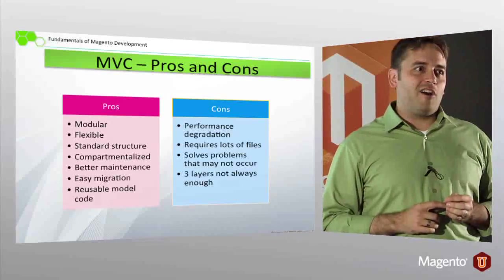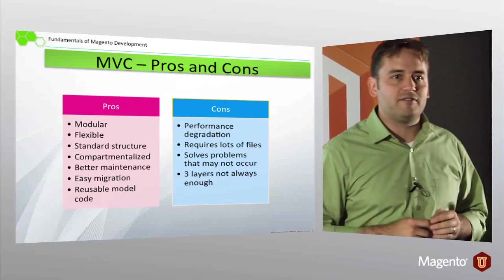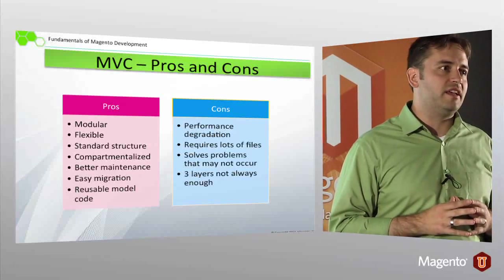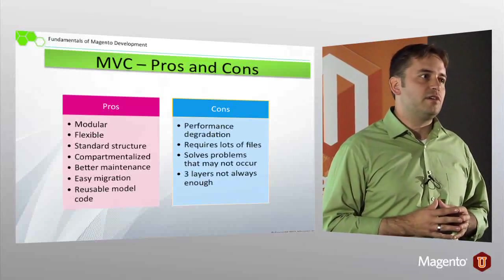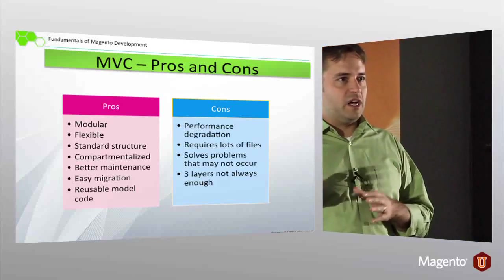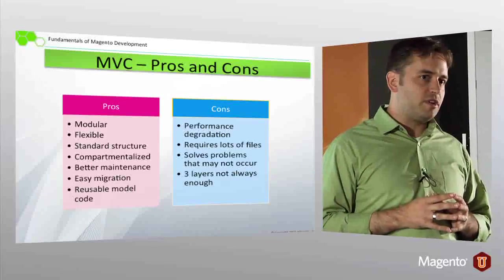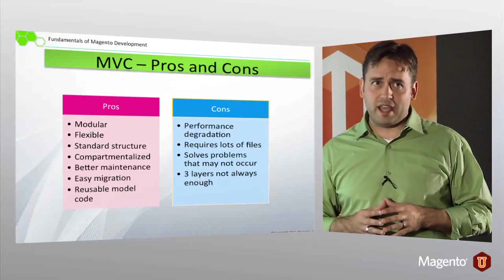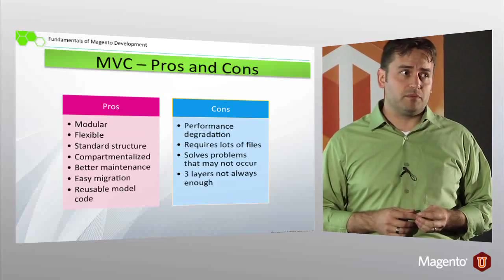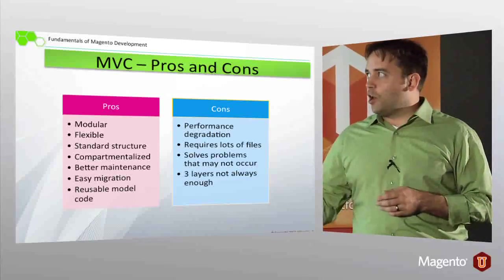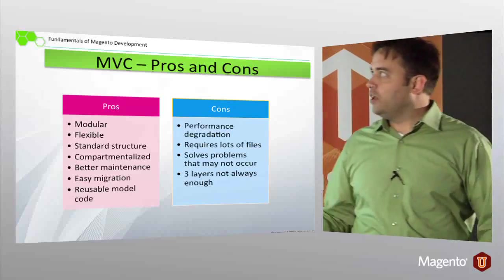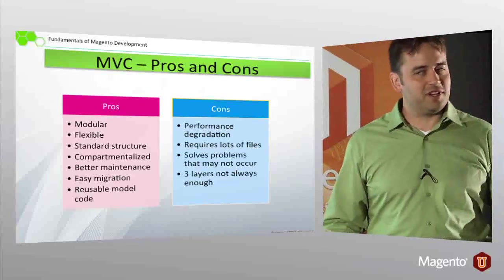The cons, of course, are performance. Generally you might have five, six, seven classes or files involved in rendering a single page, so there's some overhead. Magento — especially Magento 1, the current version that's out — has progressively dealt with these performance issues and progressively added more functionality. Enterprise Edition, for example, has a full-page cache which speeds things up tremendously. This is always a consideration with MVC, and in the case of Magento there's actually an additional layer in the V, which we'll be discussing in a couple of lessons.